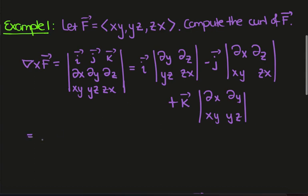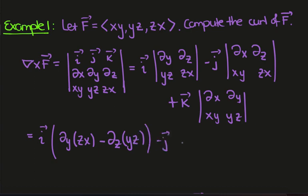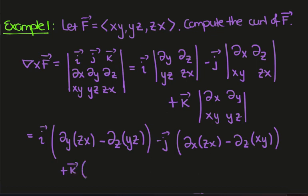Now we just need to expand this out. We'll have the y-derivative of zx minus the z-derivative of yz, minus j-hat of the x-derivative of zx minus the z-derivative of xy, plus the k-hat component where we have the x-derivative of yz minus the y-derivative of xy. Now we just need to simplify this, switching to bracket notation for the last part.